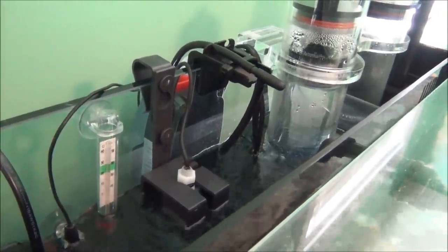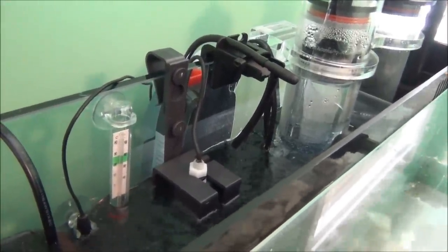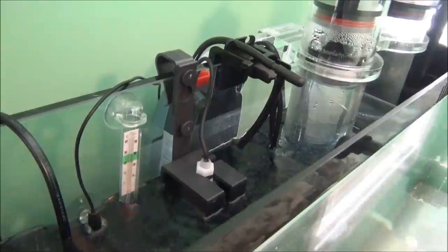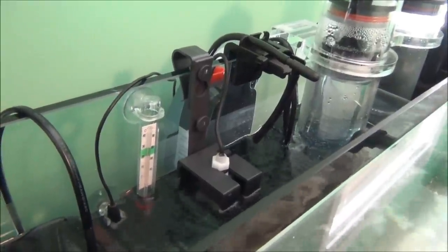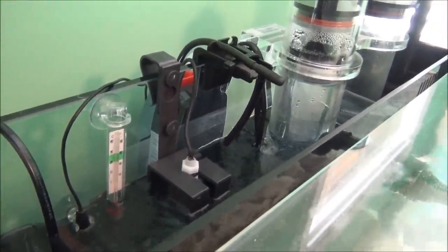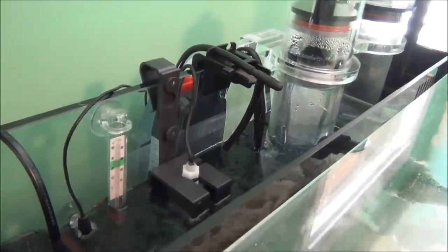But I highly recommend an auto top off unit. It'll keep your salinity extremely stable. If you can't afford one, keep your specific gravity in the range of 1.024 to allow for some error. But guys, it's extremely important to maintain consistent water parameters.